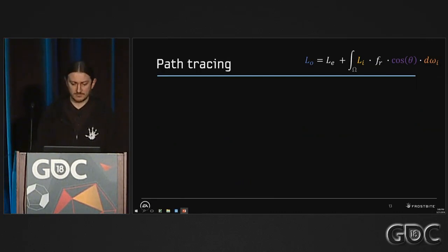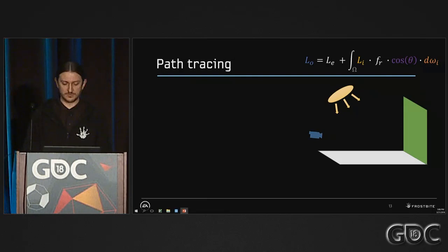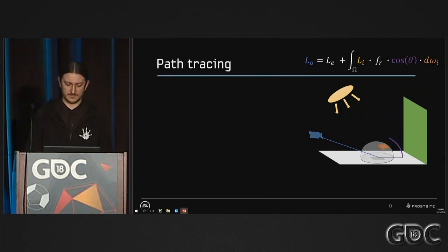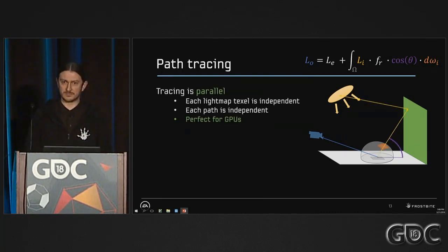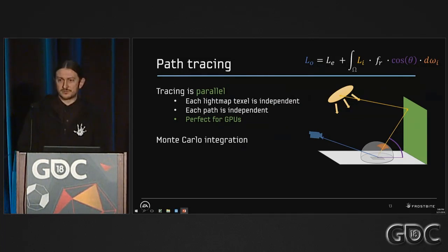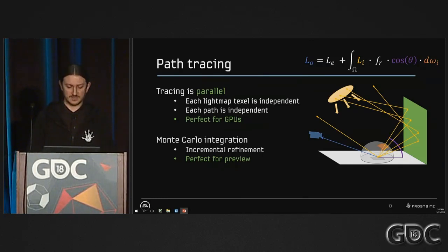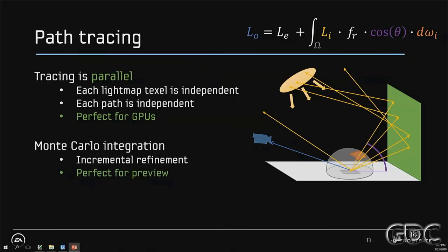What you want to do is evaluate irradiance. If you consider light maps, you want to evaluate irradiance for each texel, and for that you can use path tracing. Using path tracing, you have to integrate irradiance over the hemisphere. And if you think about it, that's a massively parallel problem — each light map texel is independent, each path for each texel is independent. So that sounds like a perfect fit for GPUs. One ray is not enough; you have to integrate multiple rays, and that can be done using Monte Carlo integration. The more rays you cast, the better you will converge toward the real solution of the irradiance for each texel. So that seems like a good solution for preview: you start with a rough estimate and then converge progressively toward the right solution.